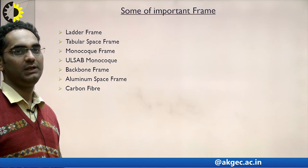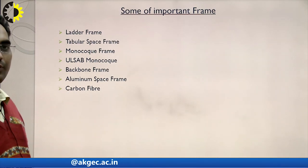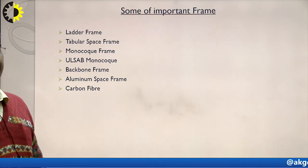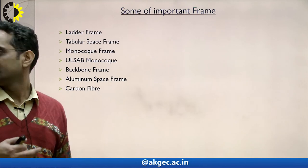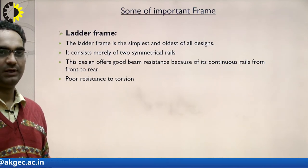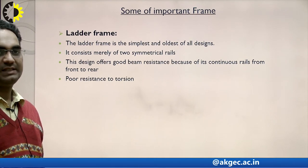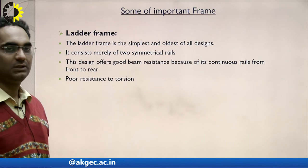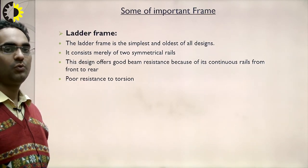Some important types of frames: ladder frame, tubular space frame, monocoque frame, ULSAB monocoque frame, backbone frame, aluminium space frame, and carbon fiber frame. The ladder frame is the simplest and oldest design, consisting merely of two symmetrical rails. It offers good beam resistance due to its continuous rails from front to rear, but has poor resistance to torsion.